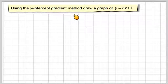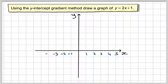Using the y-intercept gradient method, draw a graph of y equals 2x plus 1. Okay, so first of all, let's draw ourselves a set of axes. Don't forget to label the axes x and y at either end.